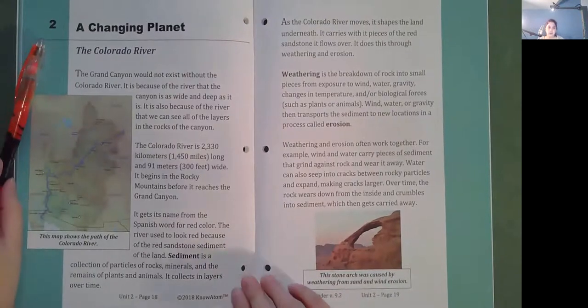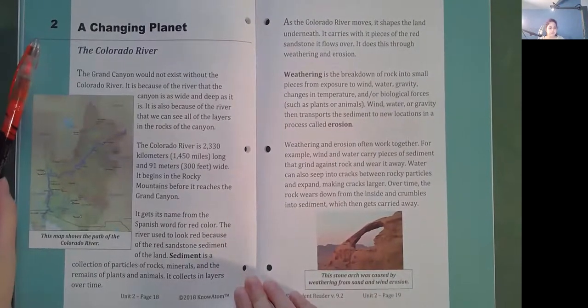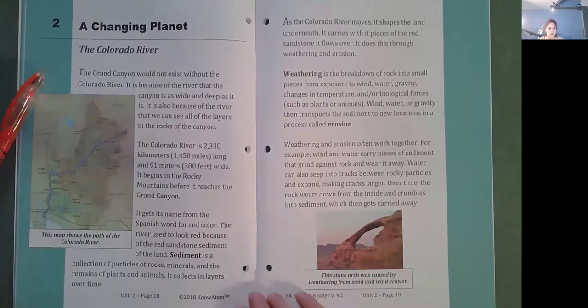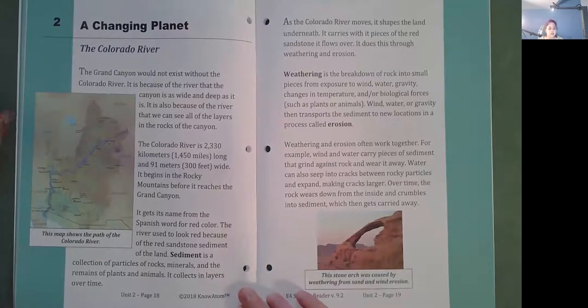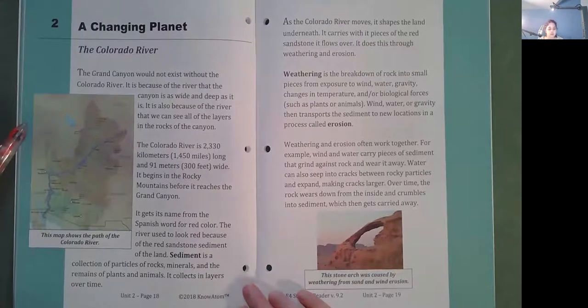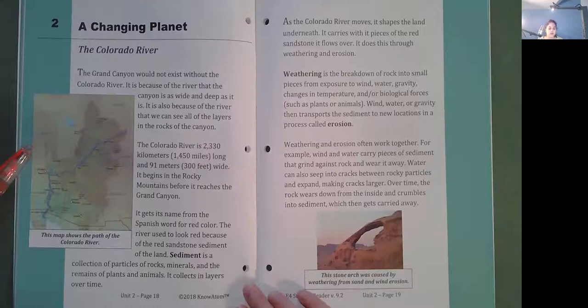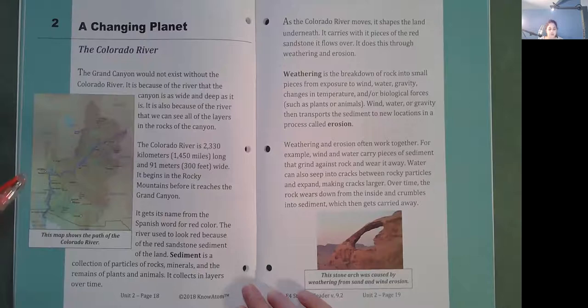A changing planet. The Colorado River. The Grand Canyon would not exist without the Colorado River. It is because of the river that the canyon is as wide and deep as it is. It is also because of the river that we can see all of the layers in the rocks of the canyon. The Colorado River is 2,330 kilometers or 1,450 miles long and 91 meters or 300 feet wide. It begins in the Rocky Mountains before it reaches the Grand Canyon. It gets its name from the Spanish word for red color. The river used to look red because of the red sandstone sediment of the land.